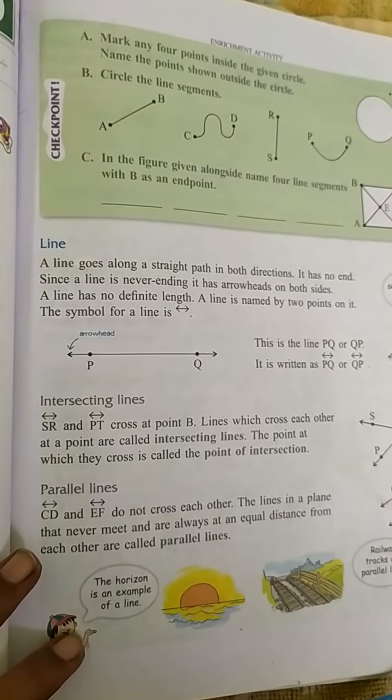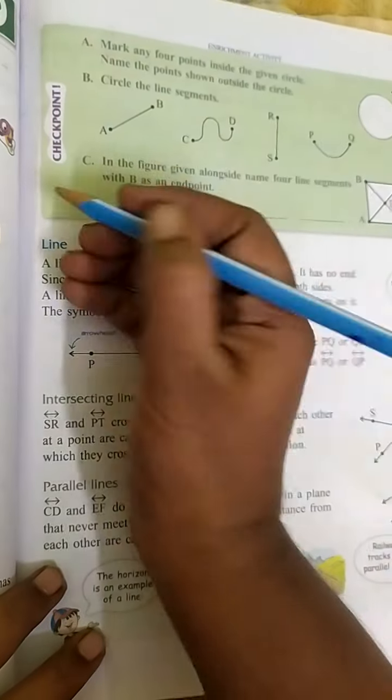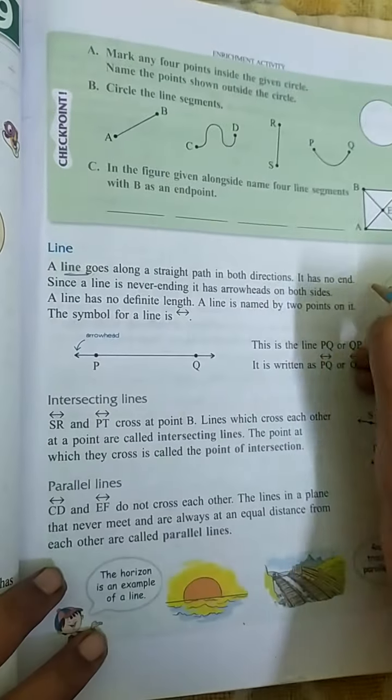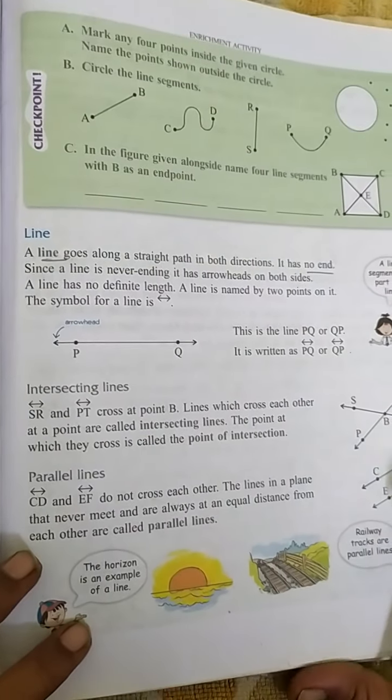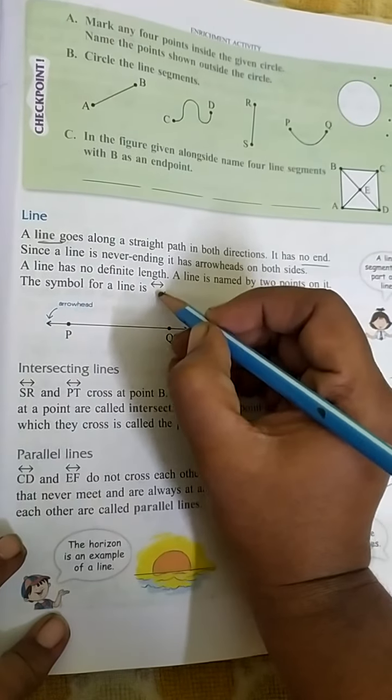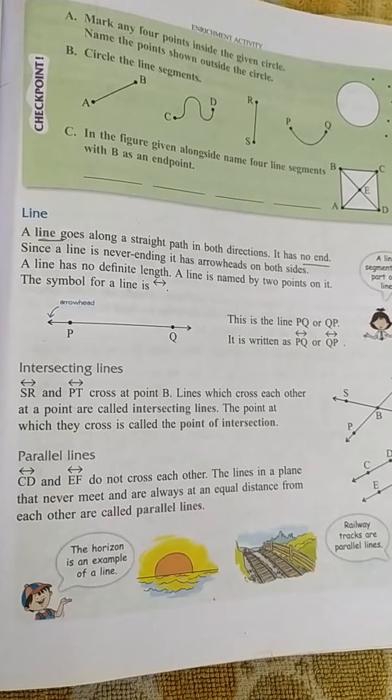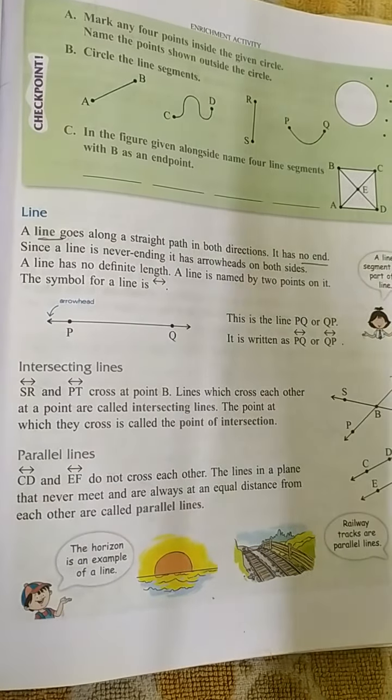The next topic is line. A line goes along a straight path in both directions. It has no end. A line is named by two points on it and we denote it by arrows on both sides. That means it goes on, it has no end.